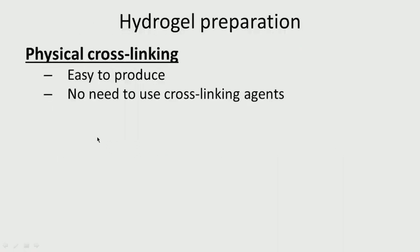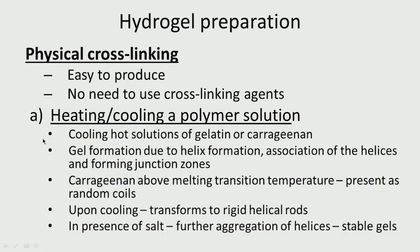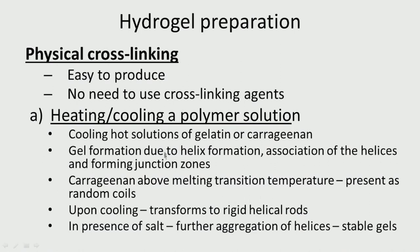How do we prepare hydrogels? One approach is physical crosslinking, which is easy to produce with no need for chemical crosslinking agents like glutaraldehyde. One method is heating and cooling a polymer solution — when hot solutions of gelatin or carrageenan are cooled, they form a gel due to helix formation. As temperature lowers, these materials form helical structures with junctions and crevices where water is trapped. Above the melting transition temperature, carrageenan chains are random coils, but on cooling they form rigid helical rods.